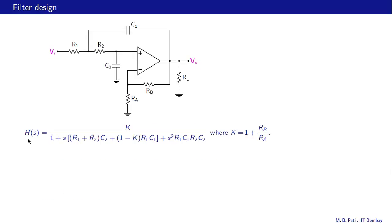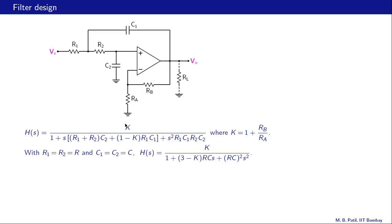This is our transfer function which we have seen earlier. In this expression, K equals one plus Rb over Ra, which is the gain of the non-inverting amplifier section. Now, putting R1 equal to R2 equal to R and C1 equal to C2 equal to C, H(s) reduces to K divided by [1 + (3 − K)·RC·s + (RC)²·s²].